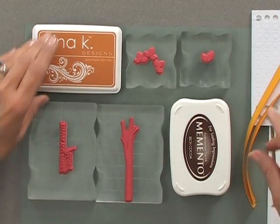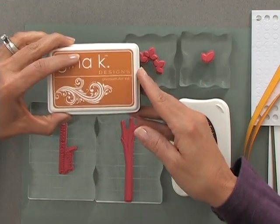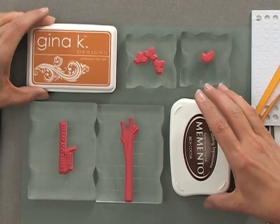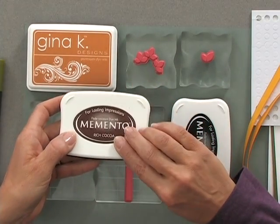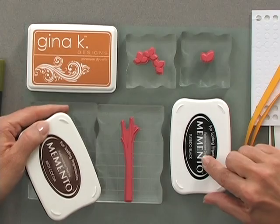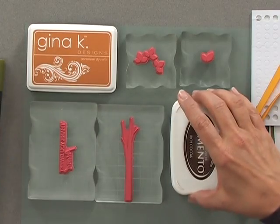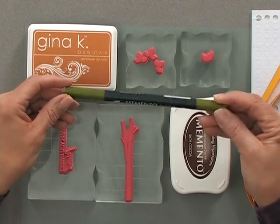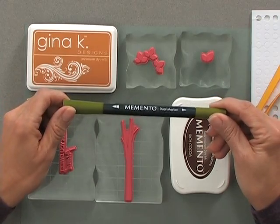I also have a couple ink pads here. The first one is the Gina K Designs Honey Mustard. I also have some Memento Rich Cocoa and some Memento Tuxedo Black. I'm using a Memento Bamboo Leaves marker for the thumping technique.